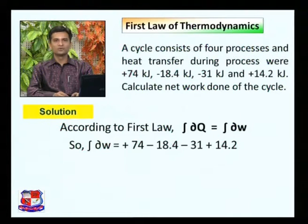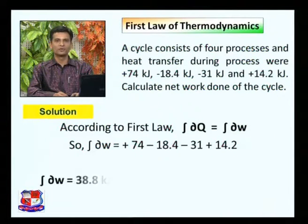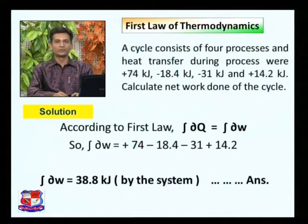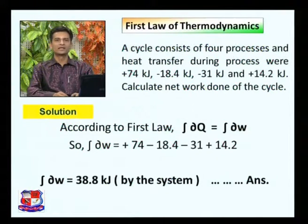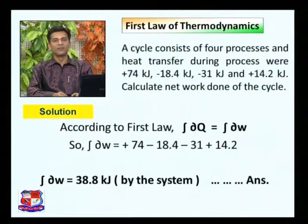Subtracting 18.4 kJ rejected from the system, minus 31 kJ also rejected, and adding 14.2 kJ added to the system. The summation of +74, -18.4, -31, and +14.2 equals 38.8 kJ. It is positive, so work done is positive, meaning the net work is done by the system. If it were negative, it would mean work is done on the system.